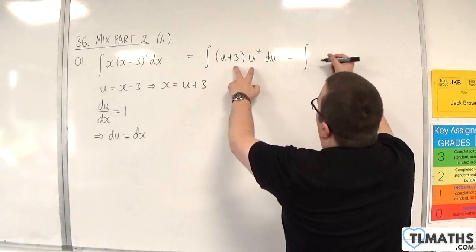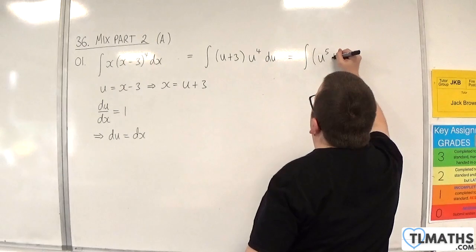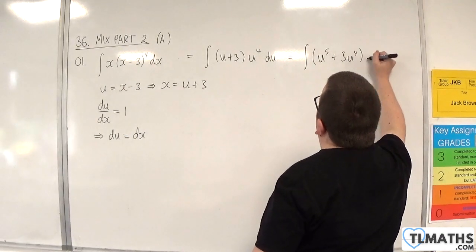Multiply out these brackets, so we're going to get u to the 5 plus 3u to the 4, du.